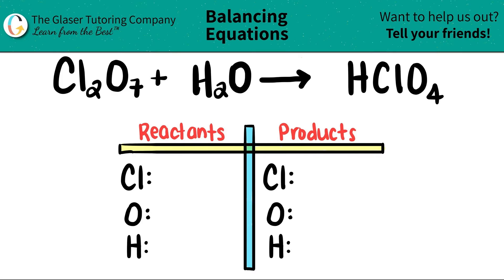Today, we're going to be balancing the equation of Cl2O7 plus H2O, and that will yield HClO4.